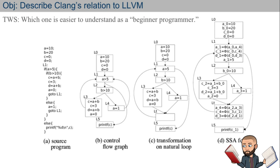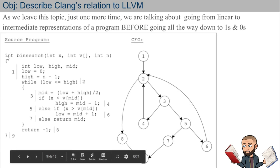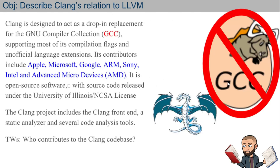Which one looks easier to understand to a beginner? As we leave this topic, we're talking about going from a linear way — a line of code — to a graph structure. Clang is designed to act as a drop-in replacement for what's called the GNU Compiler Collection, often abbreviated as GCC. Clang supports most of the compilation flags and unofficial language extensions that GCC has.